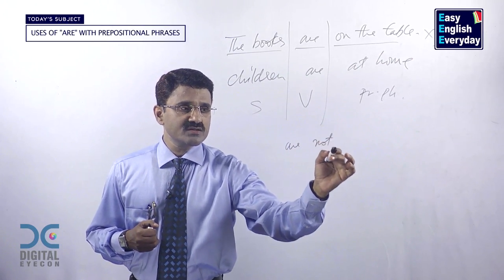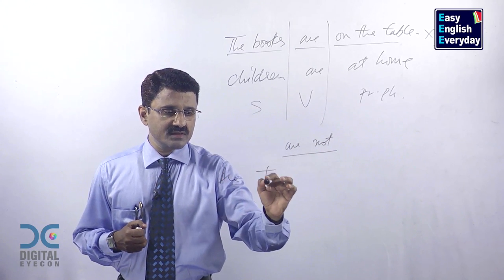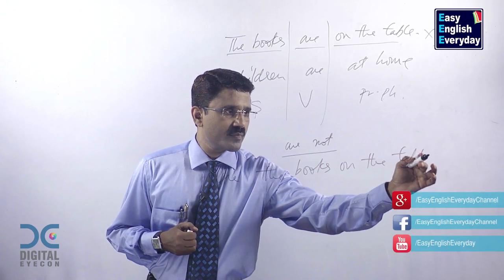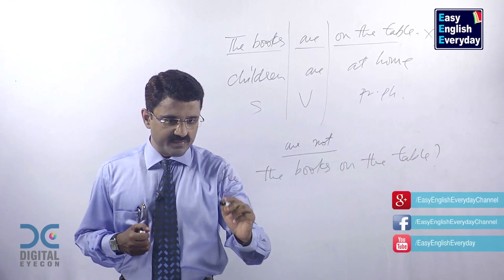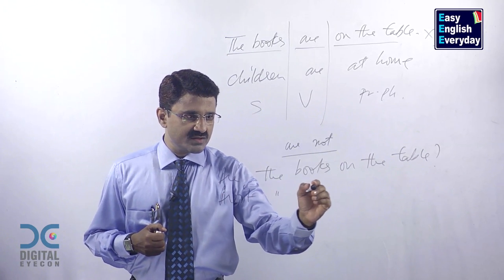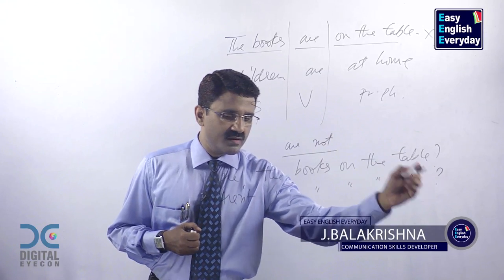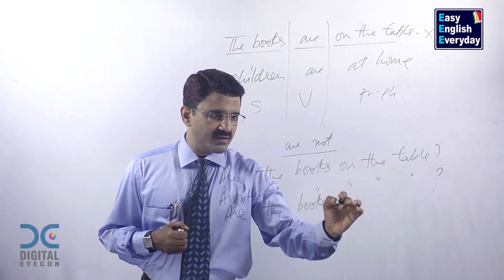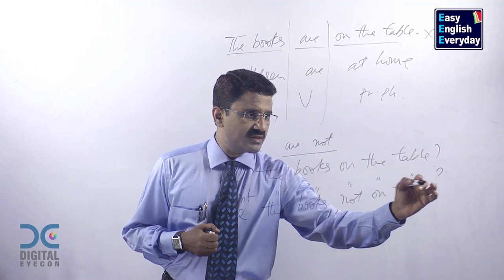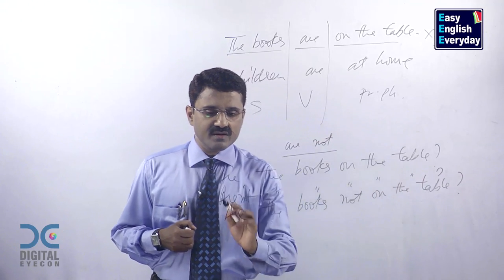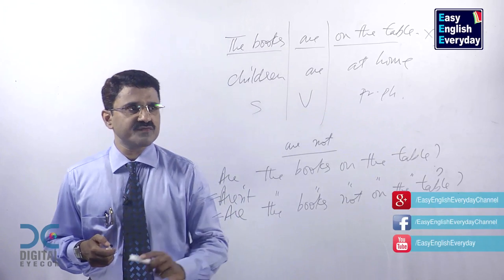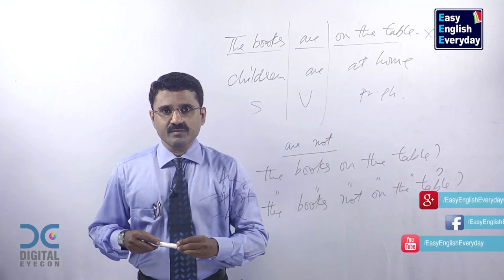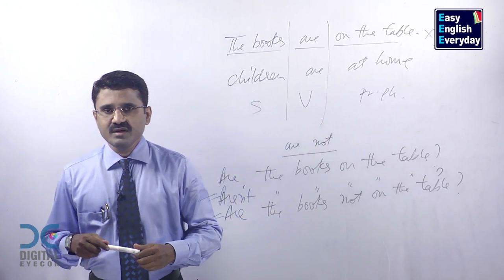The books are not on the table. Are the books on the table? Aren't the books on the table? — or you can also say: Are the books not on the table? You can use the contracted form or the expanded form. Now repeat it loudly: The books are on the table. The books are not on the table. Are the books on the table? Aren't the books on the table?